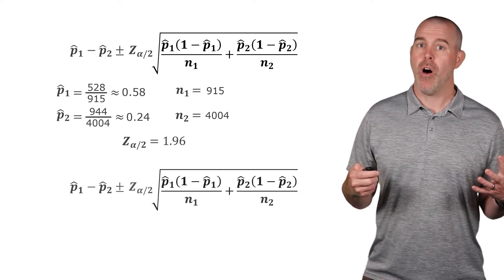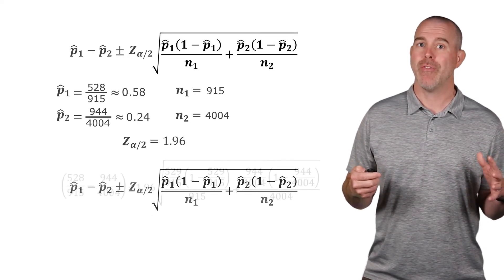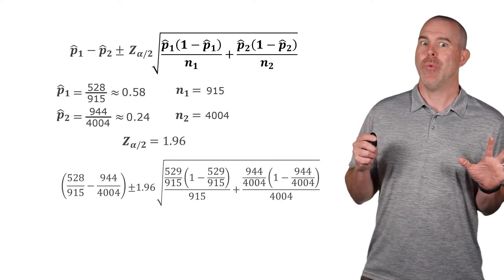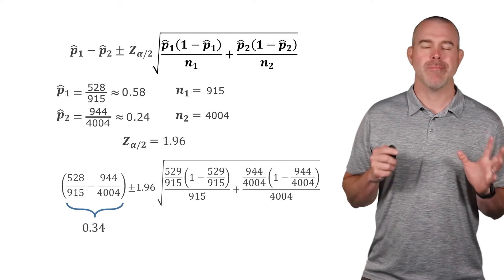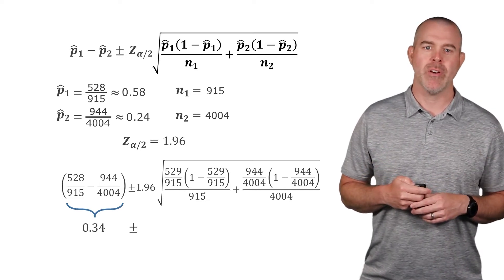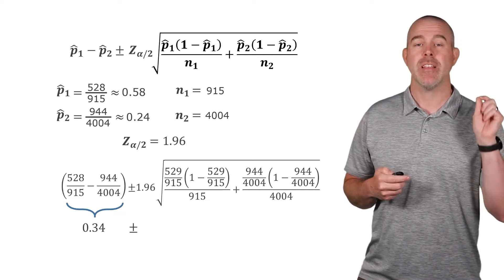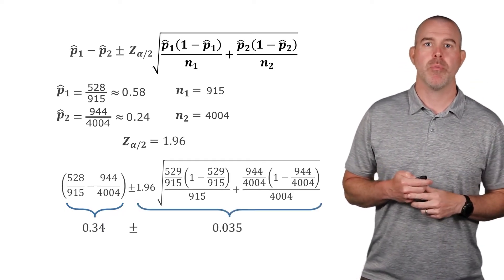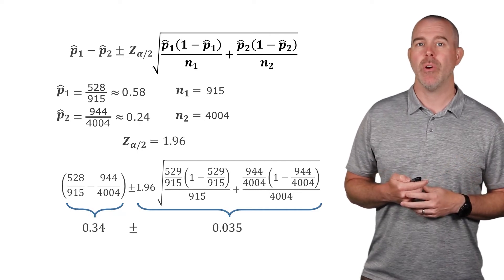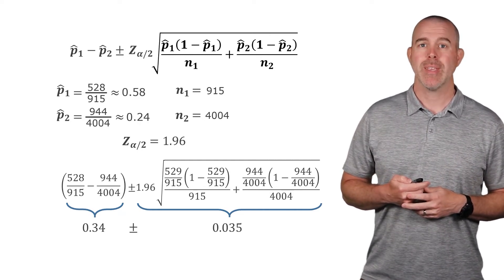Let's plug in all this stuff into our formula. So it's a little crazy. But use a calculator type these things in on a computer or whatever, we get about 34% is the sample difference, the difference between the sample proportions. And then the margin of error is about 0.035.